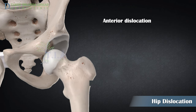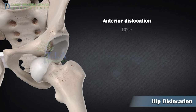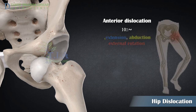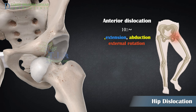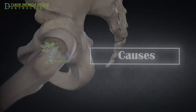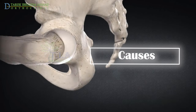In anterior dislocation, approximately 10 percent of cases, the thigh bone slips out of its socket in a forward direction. The hip appears in extension and abduction, and the leg will rotate out and away from the middle of the body.